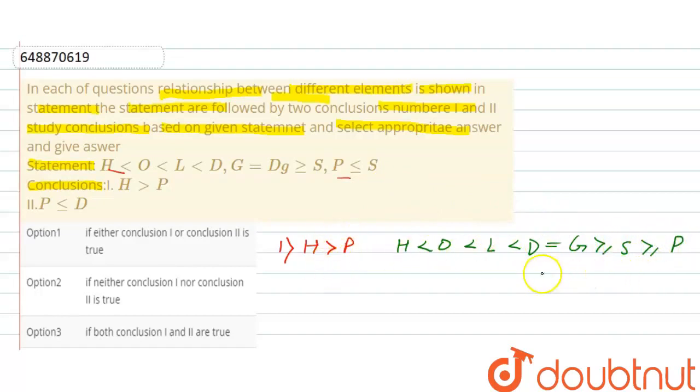Here, H greater than... and here, chain break. Chain break. Greater than... and toward H. D, chain break. L and O. Equal to P. That means, conclusion first is correct, and the statement is not following.